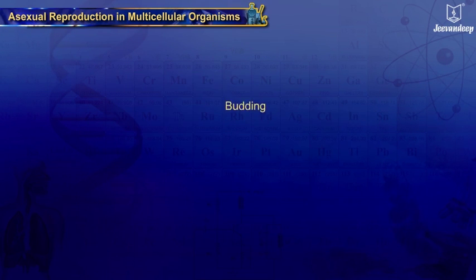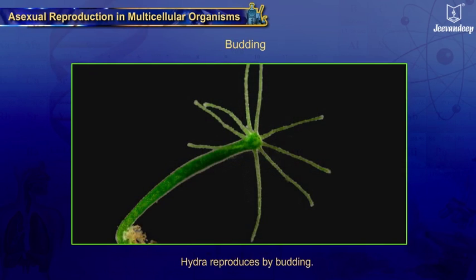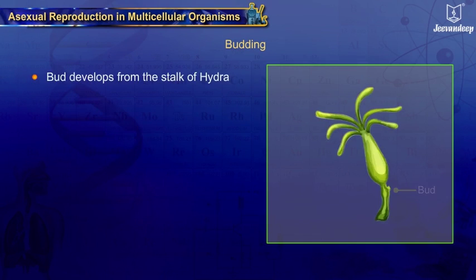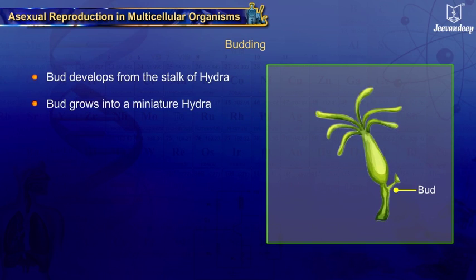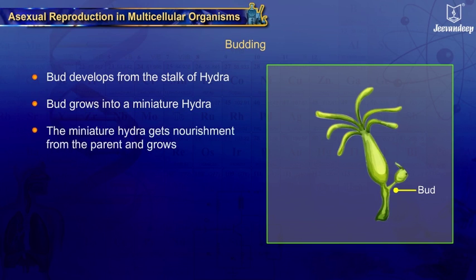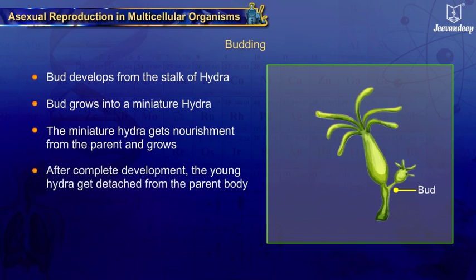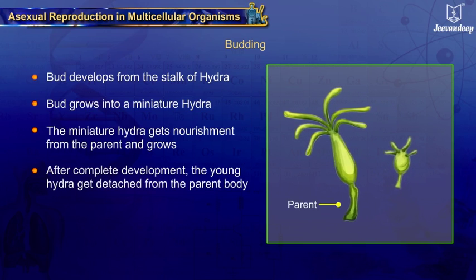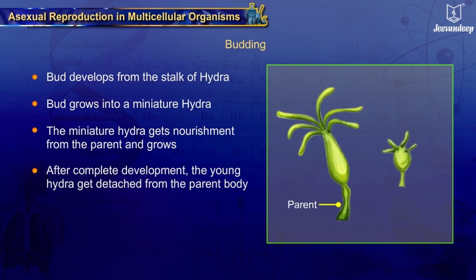Budding: Some multicellular organisms like hydra reproduce by budding. A protrusion or bud develops from the stalk of hydra and grows into a miniature hydra, whose body cavity is continuous with that of the parent hydra. The miniature hydra gets nourishment from the parent and grows. When the young hydra is sufficiently developed, the base is sealed off and it is detached from the parent body to grow as an independent individual.